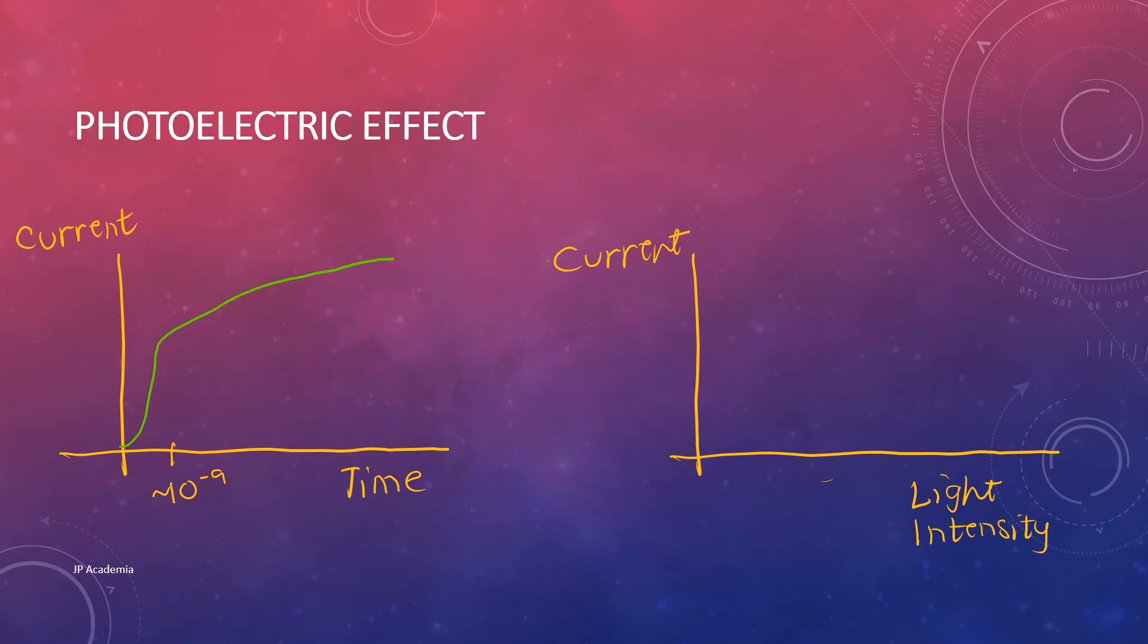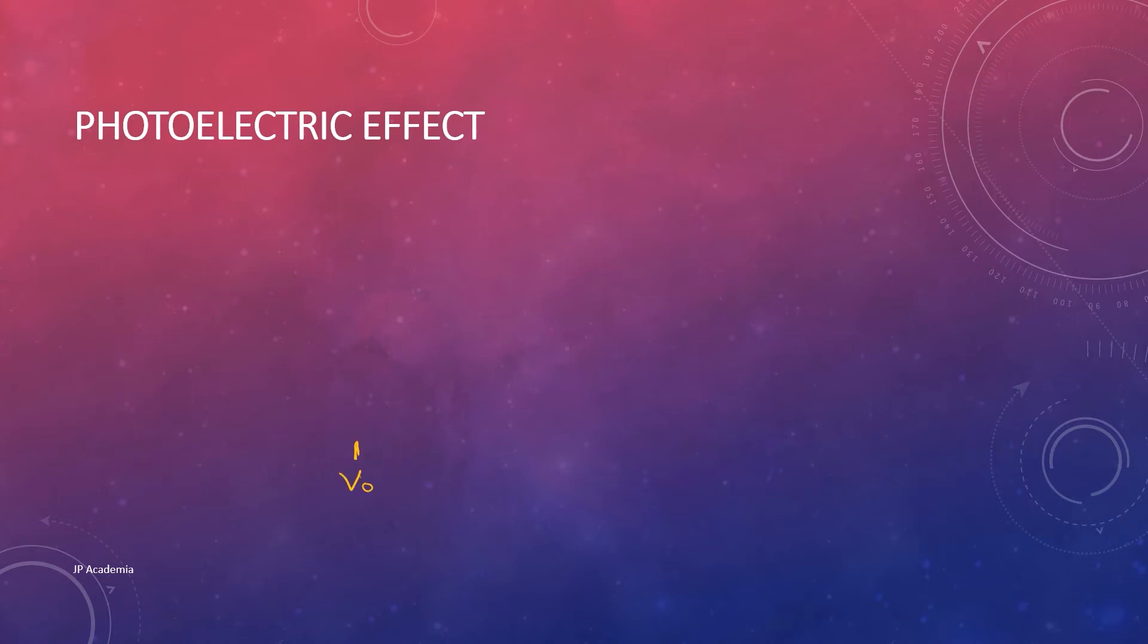Next, when our frequency, the light frequency nu and the retarding potential are fixed, the current is proportional to the intensity of our incident light.